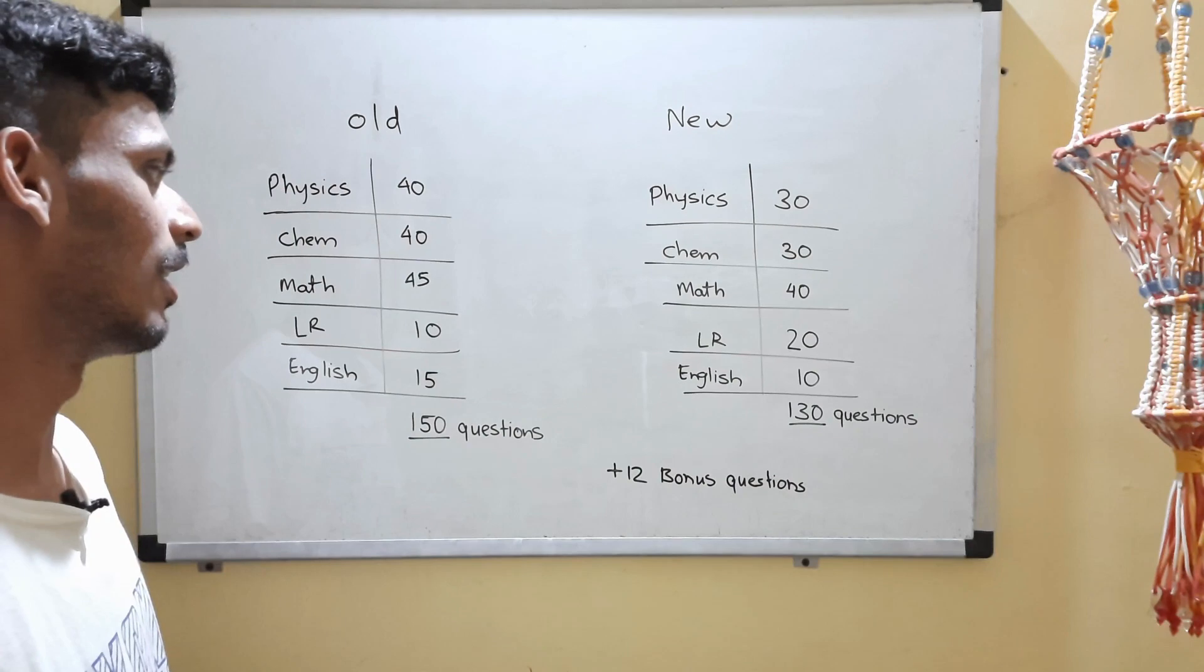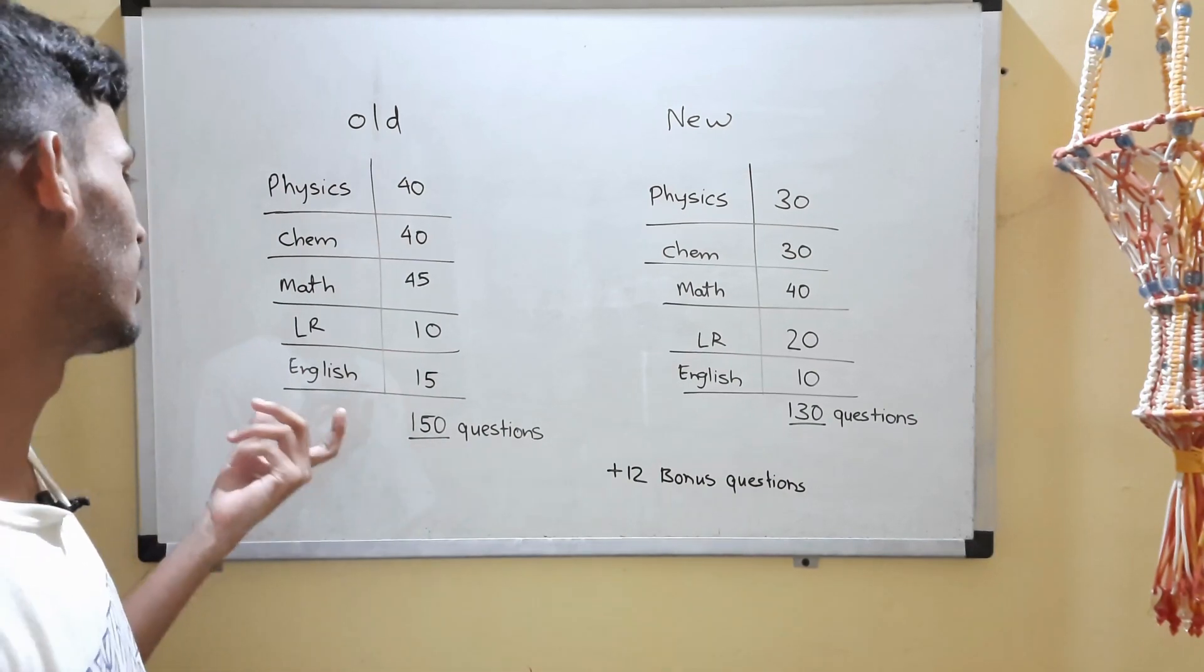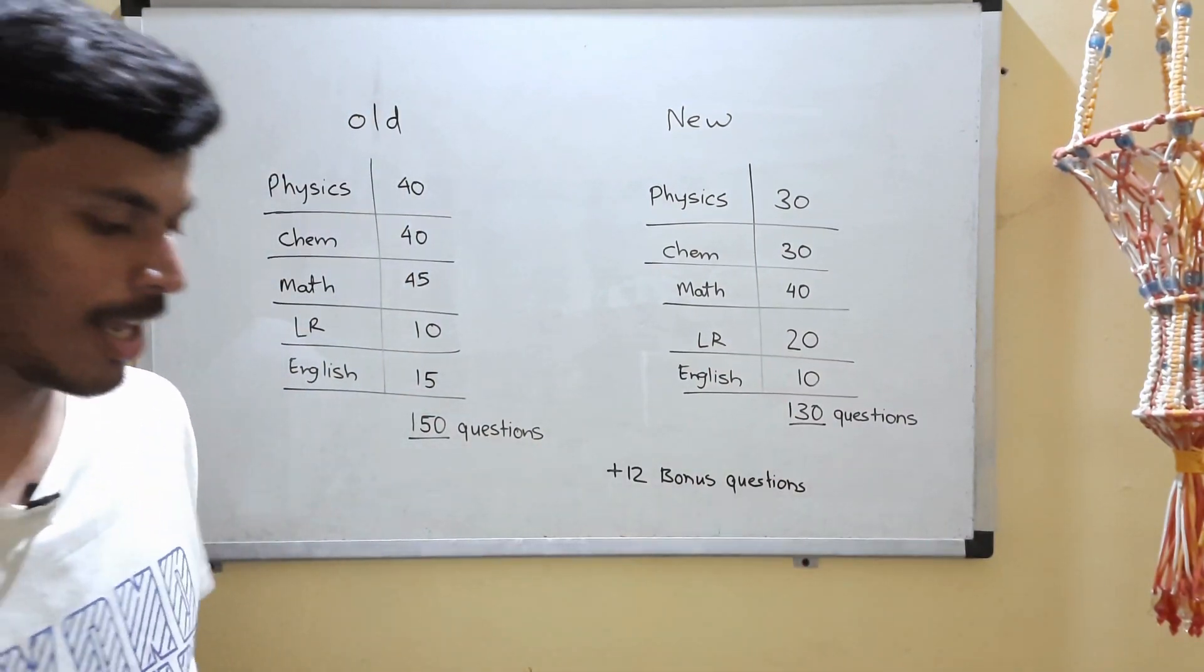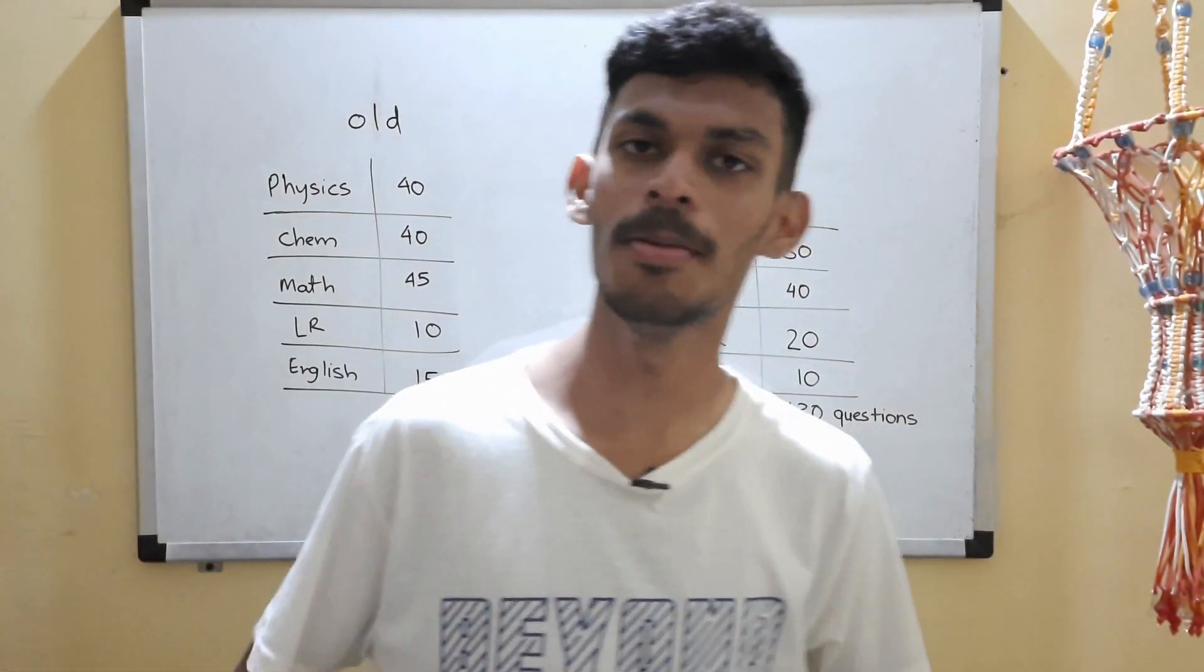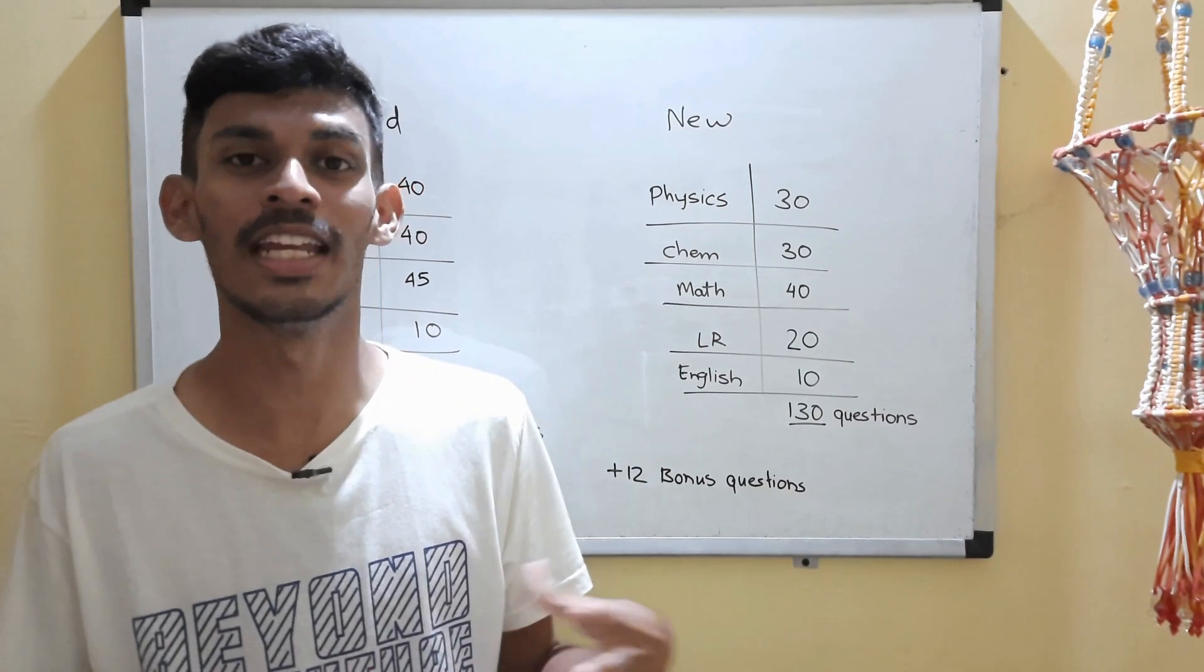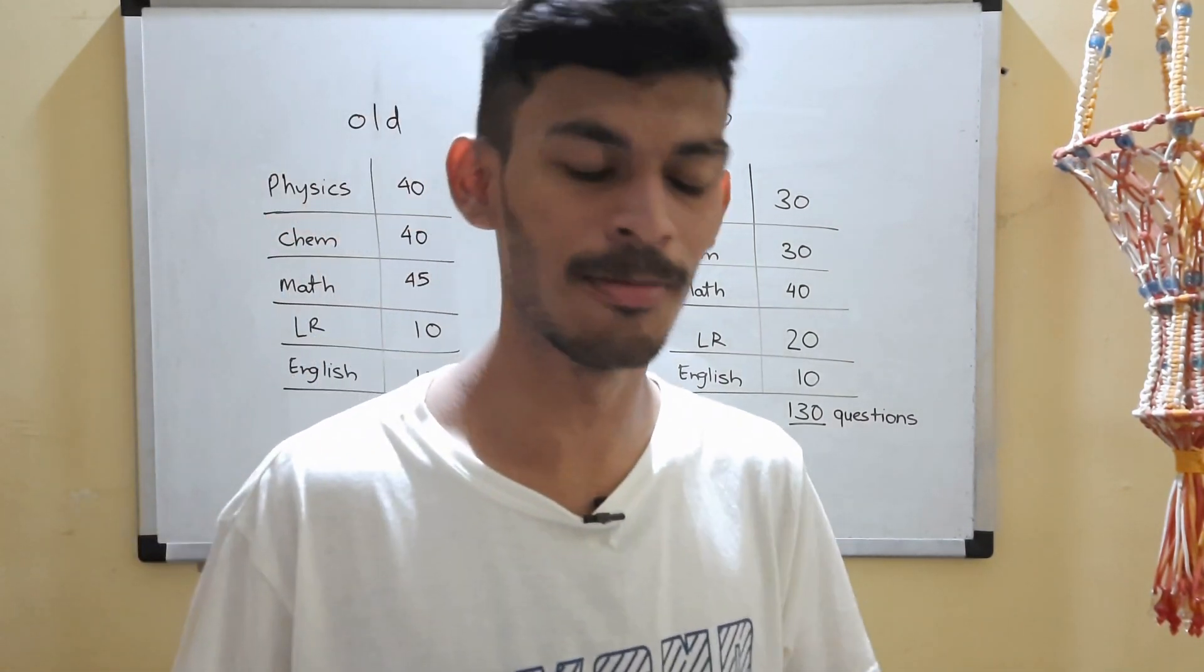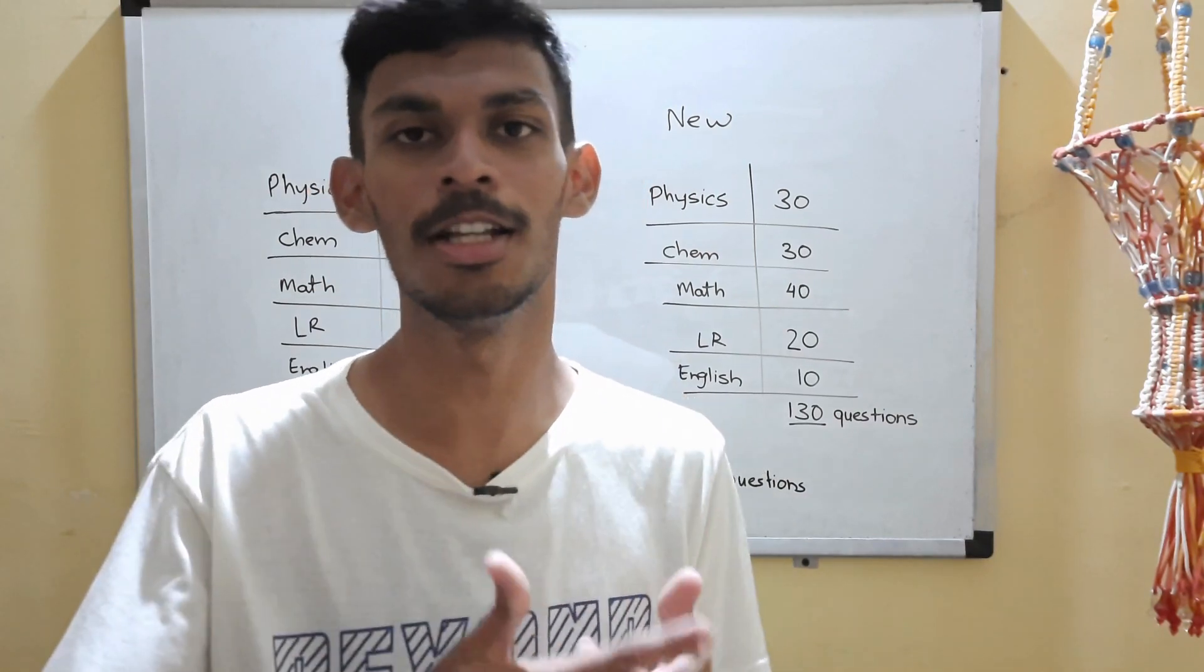One more plus point over here is that they have reduced the number of questions in English from 15 to 10. Now, this is a plus point because English is something which is very uncertain, although some are the favorite topics of BITSAT such as synonyms and antonyms, similar in meaning and opposites.